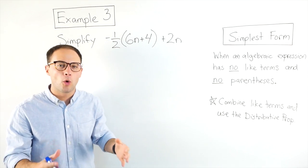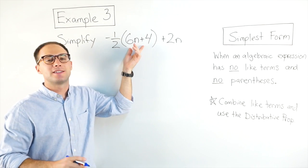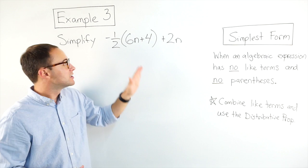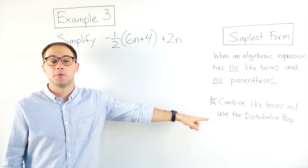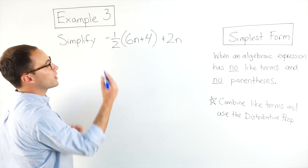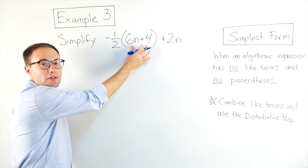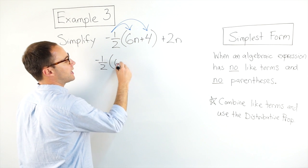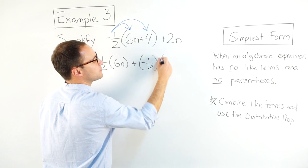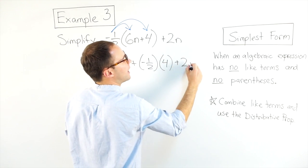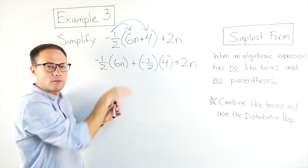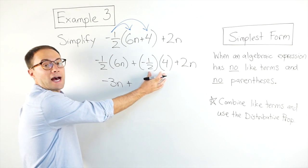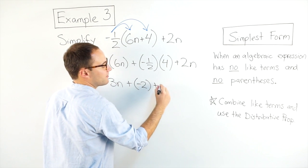Whenever you have parentheses, first thing to always look for — put a big star next to this — see if you can simplify inside the parentheses first. Looking at 6n plus 4, I can't simplify inside because they're not like terms. So now I'll use the distributive property and distribute negative one-half to everything inside the parentheses: negative one-half times 6n, plus negative one-half times 4. Then I still have the plus 2n. Make sure you always show your work going down, nice and organized. Simplifying: negative one-half times 6n is negative 3n, and negative one-half times 4 is negative 2, and then I still have plus 2n.